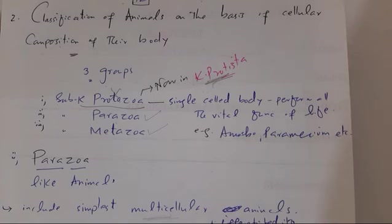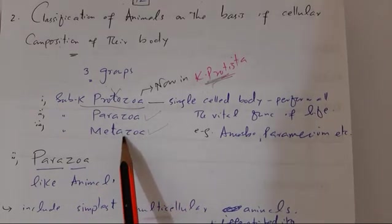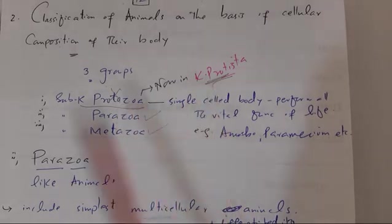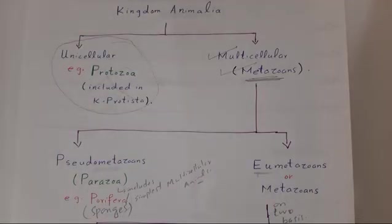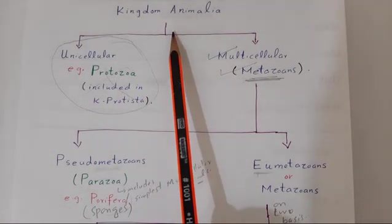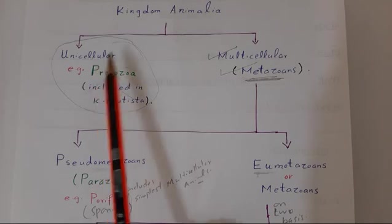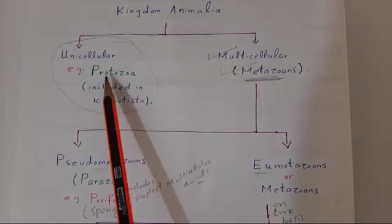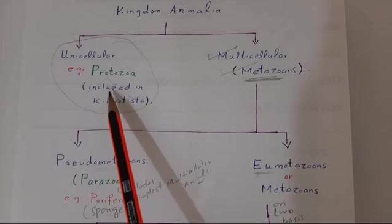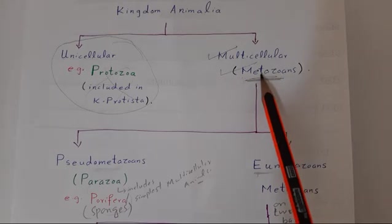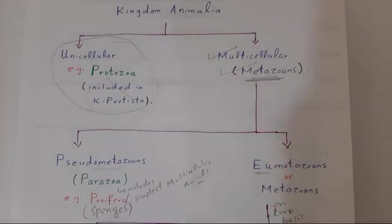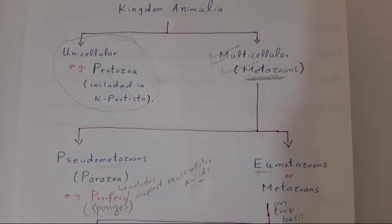We first studied the classification of animals on the basis of vertebral column, and now we studied the classification on the basis of cellular composition of their body into three groups: Protozoa, Parazoa, and Metazoa. We now only study Parazoa and Metazoa in Kingdom Animalia, as Protozoa is now part of Kingdom Protista. Traditionally, Kingdom Animalia was divided into unicellular and multicellular animals, but Protozoa is now in Kingdom Protista, so we only study multicellular animals in Kingdom Animalia.